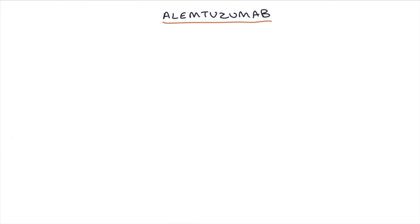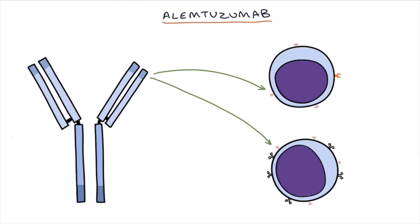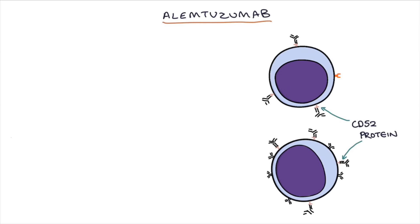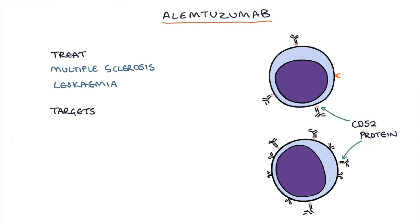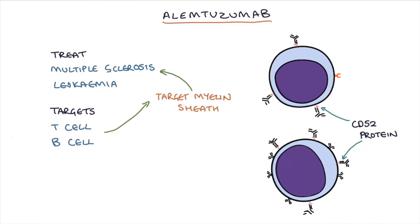Next, alemtuzumab — this is a monoclonal antibody that targets the CD52 protein on T and B lymphocytes. It's used to treat multiple sclerosis and certain types of leukemia. It works by targeting those T and B cells associated with the CD52 protein, with the intention of reducing the amount of those cells that might be targeting the myelin sheath in MS or may be cancerous in leukemia.